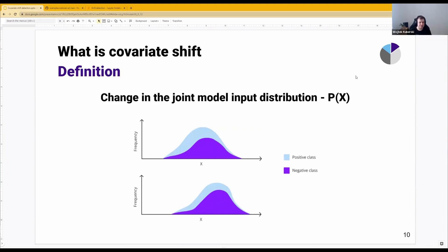Let's start with defining what covariate shift is. We can quickly define covariate shift as the change in the joint model input distribution. Imagine that you have multiple features comprising your model inputs. If this joint distribution changes in any significant way, then we can talk about covariate shift.